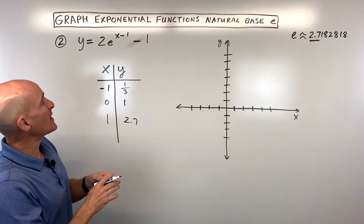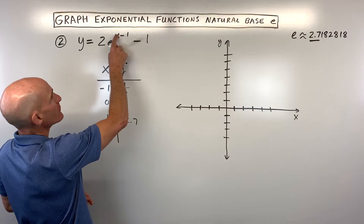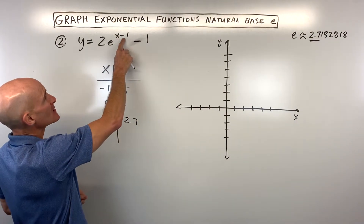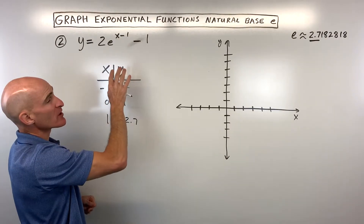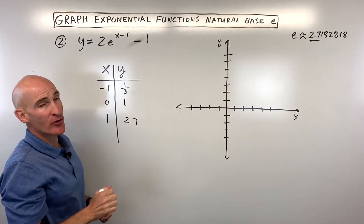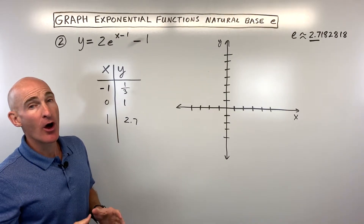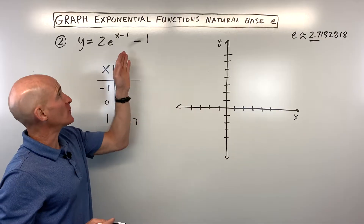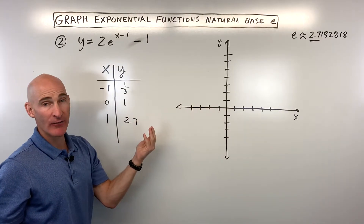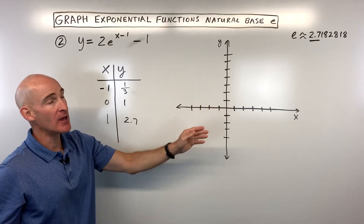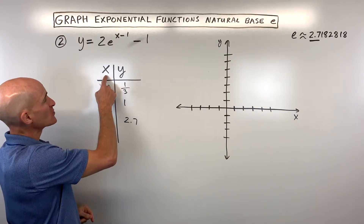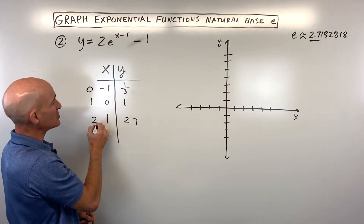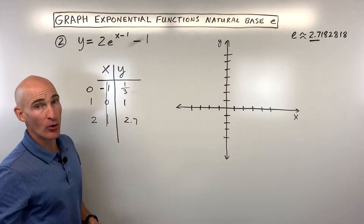Looking at the transformations, I like to start from where the x is and work my way out. This minus 1 is closest to the x, and it's going to shift the graph right 1. When it's grouped with the x like this, it has the opposite effect — if it's minus 1, it goes right 1. So we add 1 to all of our x-coordinates, making them 0, 1, and 2.